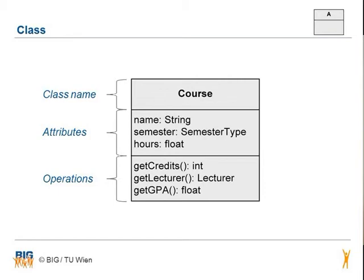When we instantiate the class course, we can be sure that the objects provide the three attributes and the three operations.